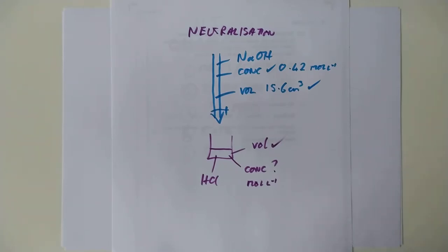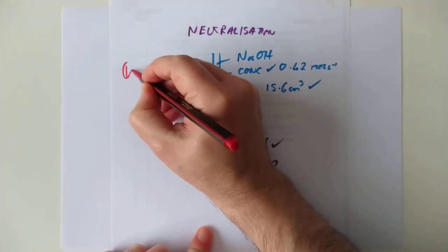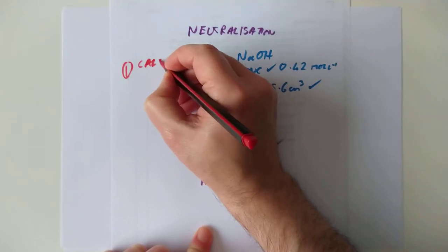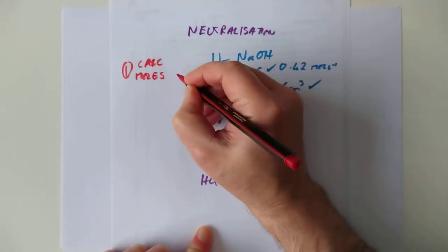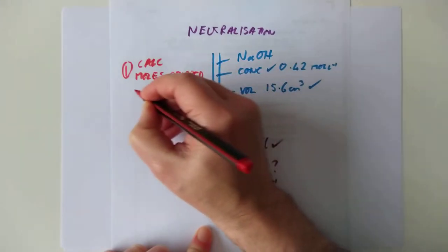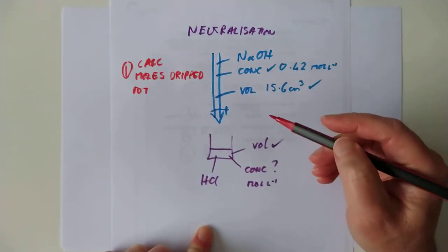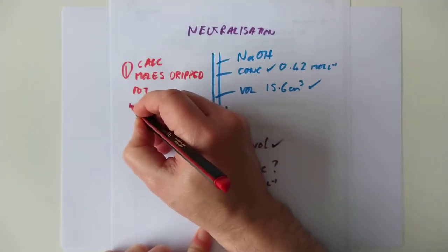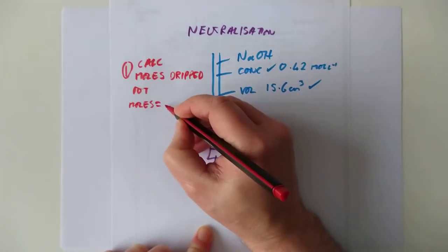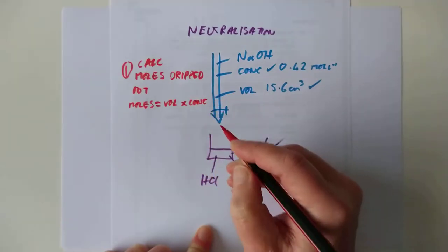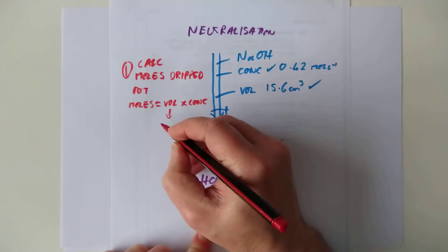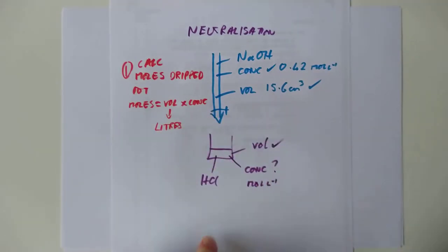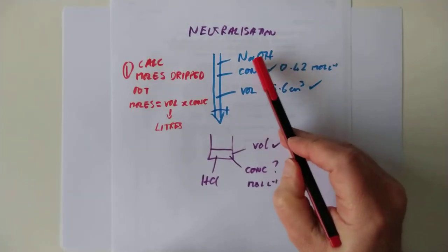And because we are the one that's actually working the tap here, we can drip a very precise volume out of this, to the nearest drip, in fact. And, if there is an indicator in here, we will drip the sodium hydroxide in. It will react with the hydrochloric acid until the colour just changes. At that point, you know you have added a precise volume, just enough to neutralise all this hydrochloric acid. And the volume, let's make a volume up. Let's call it 15.6 centimetres cubed.